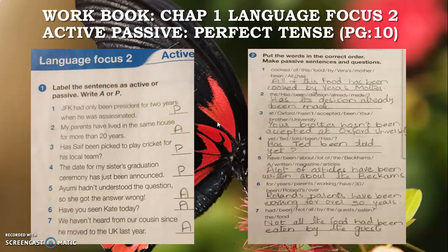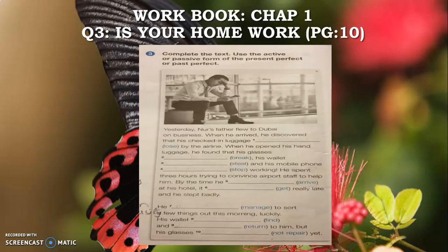Question Number Two: I have also solved this question for you to give a better understanding of the passive voice. Your task is to put the words in the correct order to make a passive sentence or question. Question Number Three is your homework: complete the text using the active or passive form of the present perfect or past perfect.